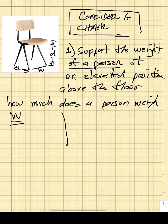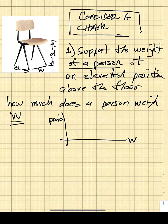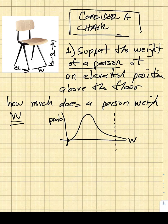There will be some statistical distribution of the average weights of an individual. We can plot weights on one axis and the probability of a person weighing that amount on another. We are going to have to make a decision about what weight we are actually going to design to. We have to specify a max weight and design it to support that max weight with some factors of safety.